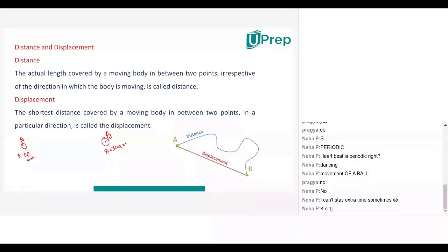Tell me whether it is in a state of motion or rest. It is in a state of motion. Why? Because at 8 o'clock it is at one position and at 8:30 it is at another position — the position is changing. Now, from 8 to 8:30, whether it traveled this path, or this path, or this path — in which path did it travel?